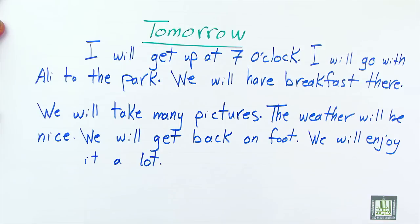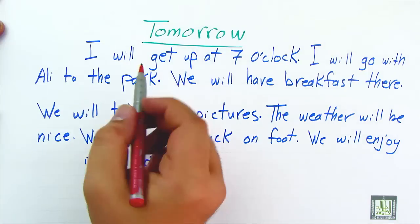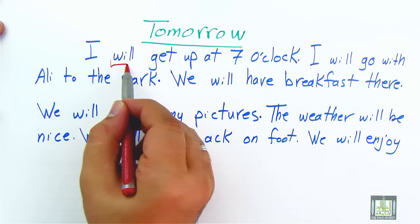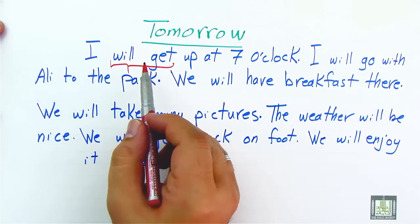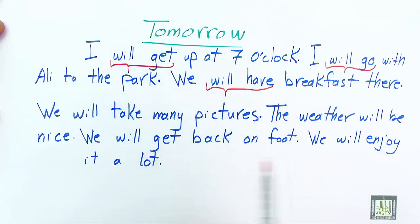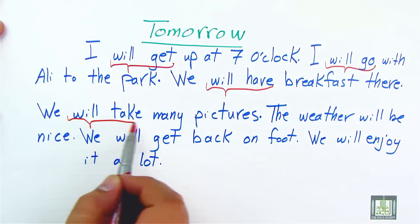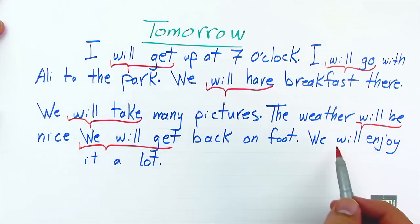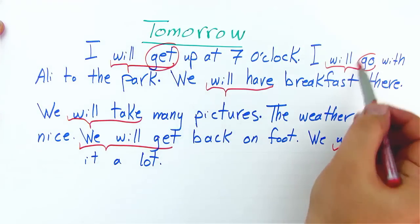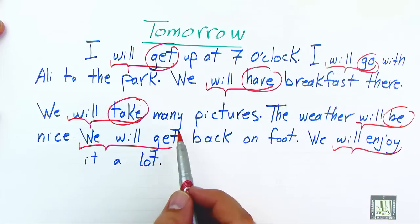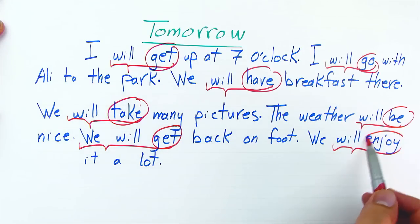Now, notice with me the difference between past forms and future. In past forms, we said I got, but since we are talking about future, we say we will get, we will go, we will have, will take, will be, will get, and will enjoy. Notice that after will, all verbs used must be in the first form, infinitive without to.